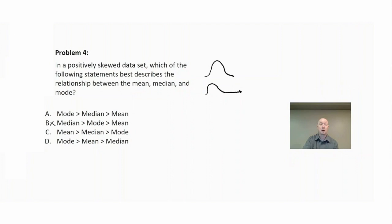So choices A and B are eliminated. So the correct answer is going to be between choice C and D. Well, in this case, the mean is always going to be greater than the mode in a positively skewed data set.